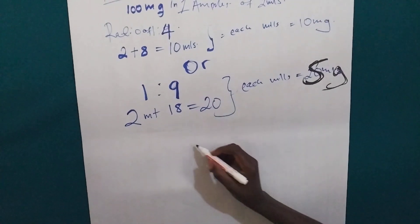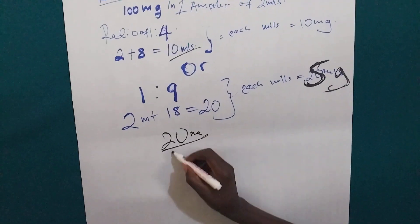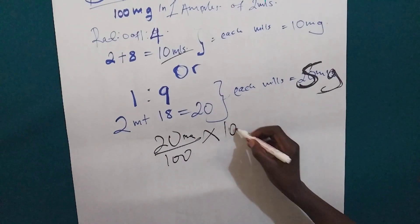So, this one is 20. We are going to first use this dilution. 20 divided by 100, then we multiply by 10.